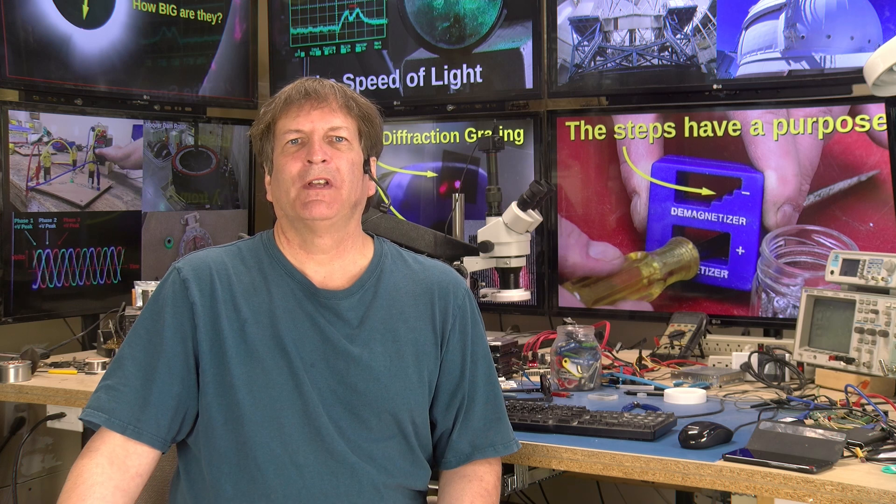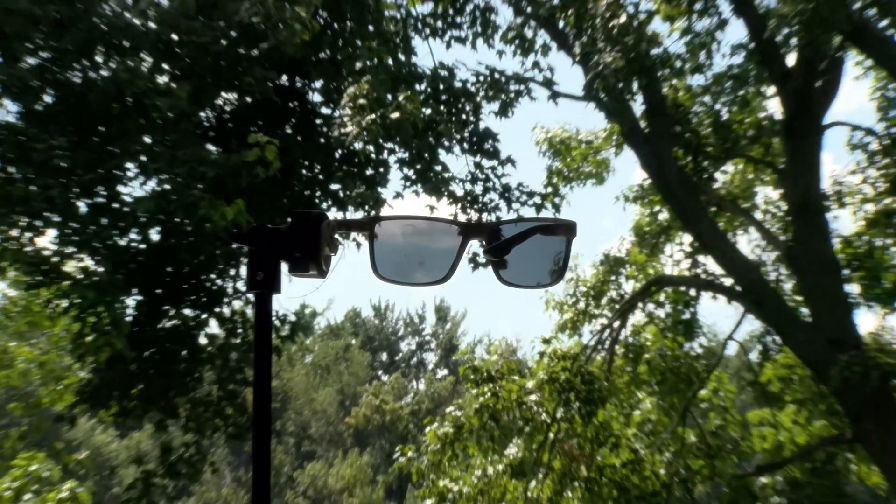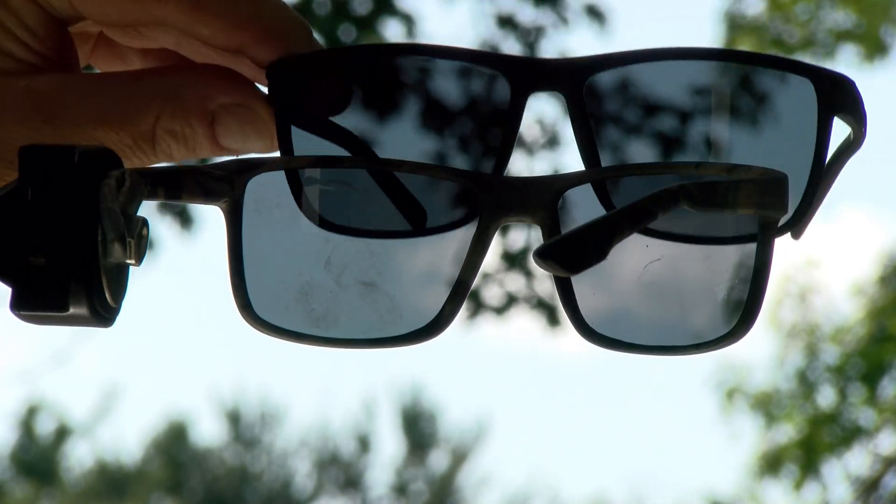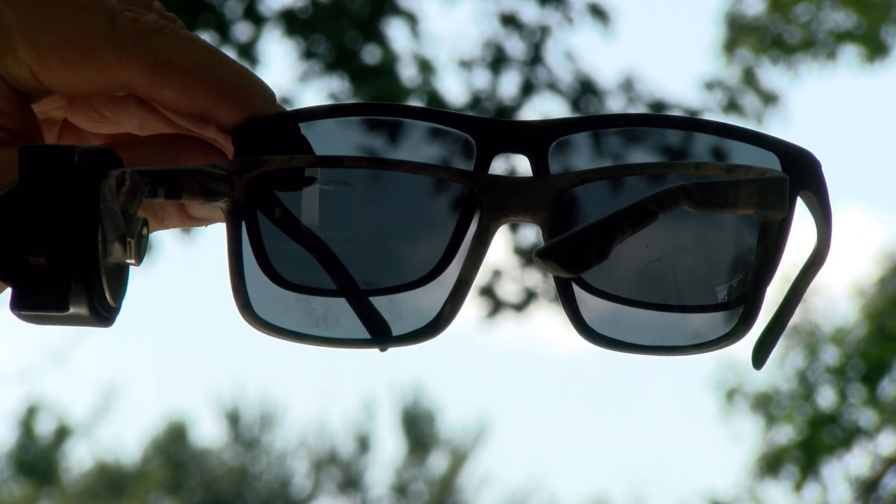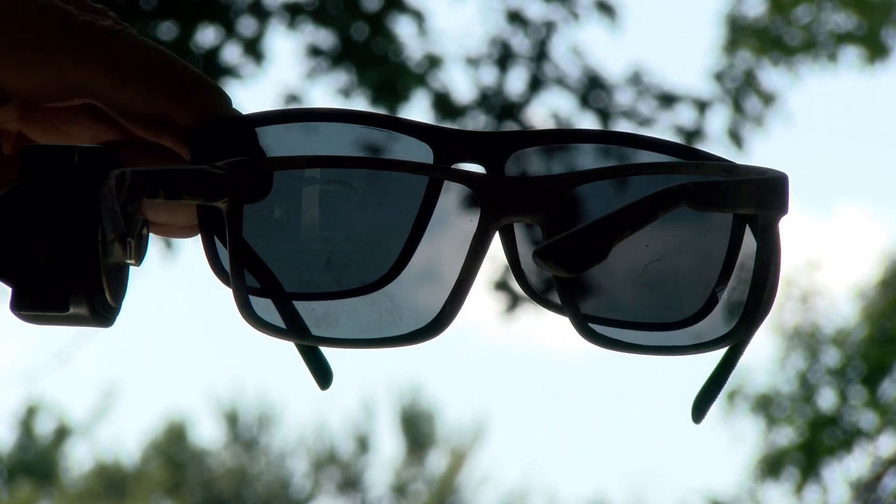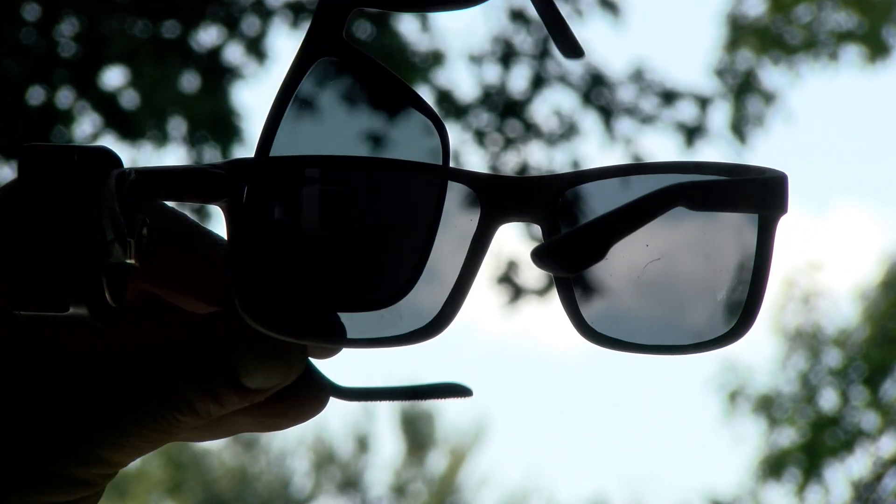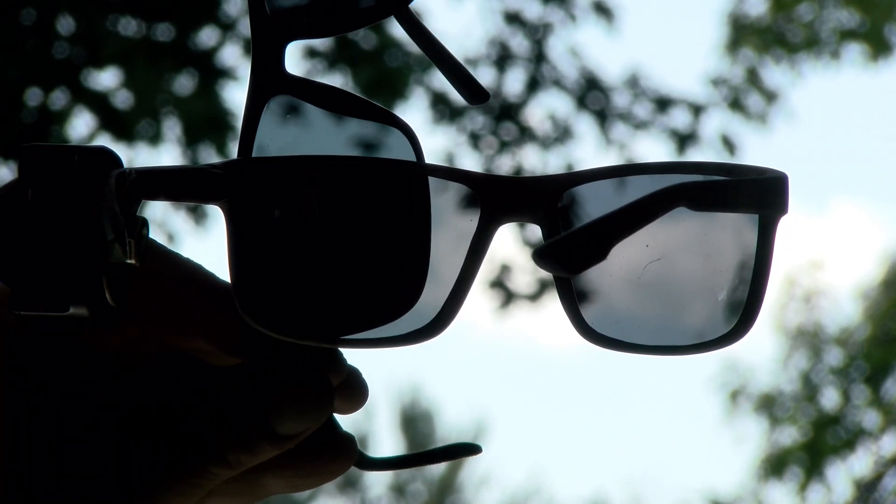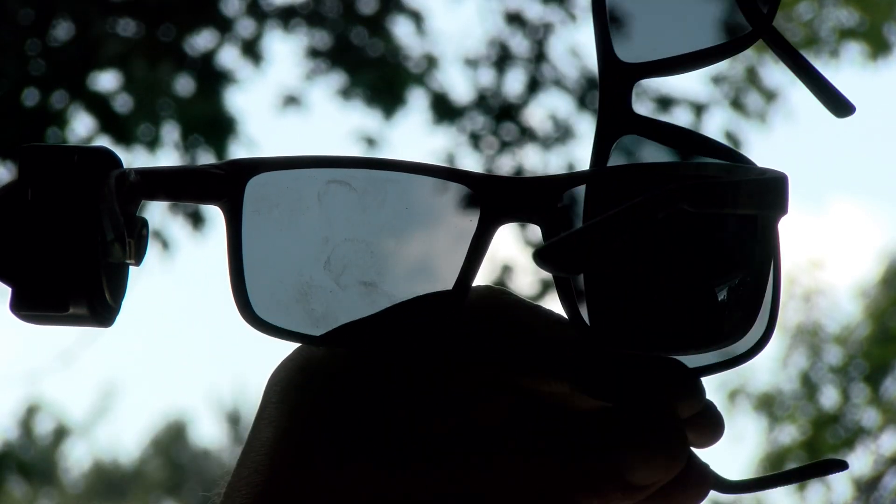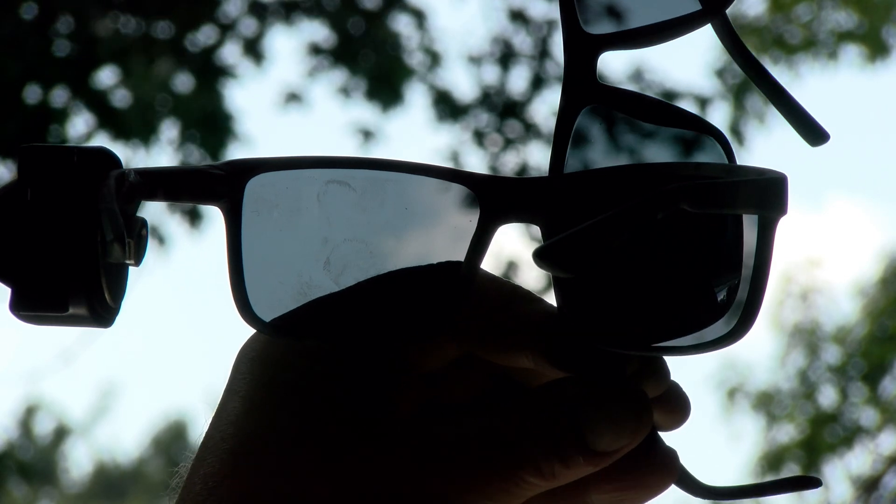A better test is if you have two pairs of sunglasses, put one on and hold the second so you can see through both of them. Now, rotate the glasses in your hands, and you should gradually see the light going through both dim and go black. No light gets through when they're at 90 degrees.